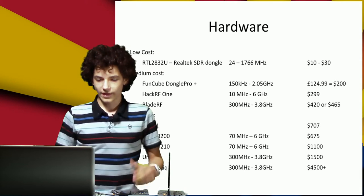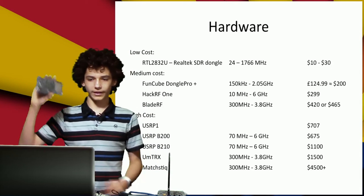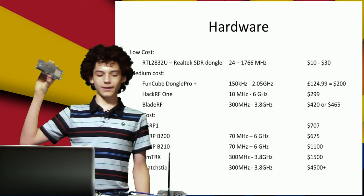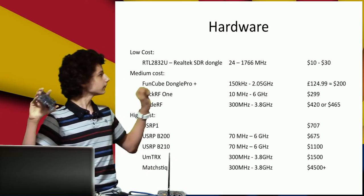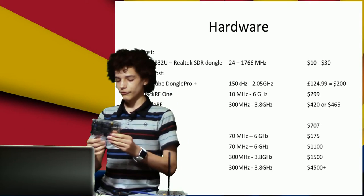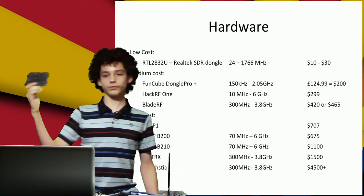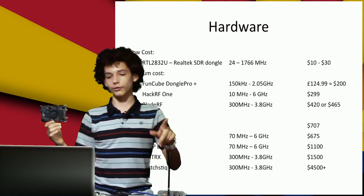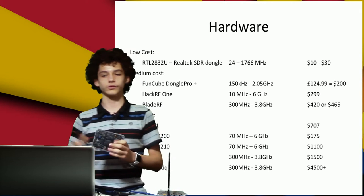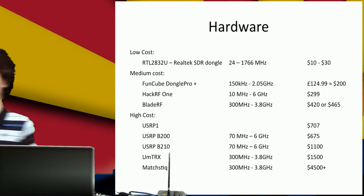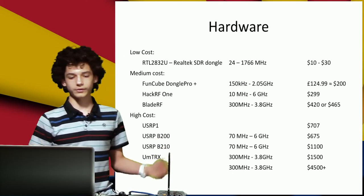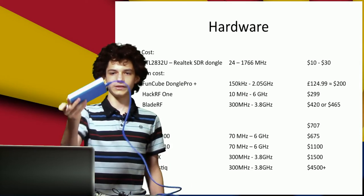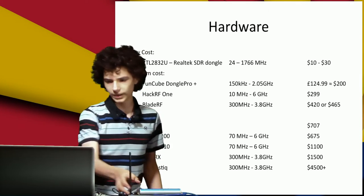As you go up in price there is the HackRF1 and the BladeRF — I have the BladeRF here. The nice thing about the more expensive ones is they can transmit and receive. The BladeRF I can transmit as well as receive. The HackRF can also do that, but it's half duplex so you can only do one at a time. If you want I'll pass this around so you can look at it. This is the dongle. As the cost goes up you can get things like the USRP — this is the B200. And then there are other things too.